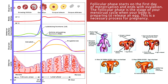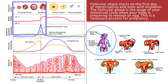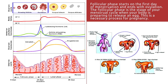The follicular phase starts on the first day of menstruation and ends with ovulation — that is, from day 1 to day 14. Prompted by the hypothalamus, the pituitary gland releases follicle-stimulating hormone (FSH), which stimulates the ovary to produce around 5 to 20 follicles on the surface of the ovary. Each follicle houses an immature egg; usually only one will mature while the others die, occurring around day 10. The growth of the follicles stimulates the uterine lining to thicken in preparation for possible pregnancy.